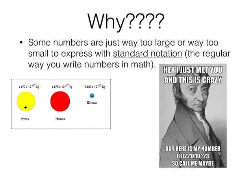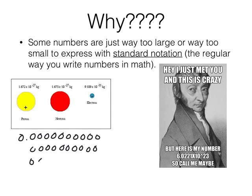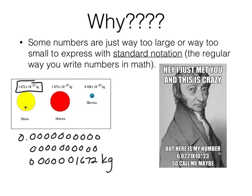Why do we use scientific notation? Some numbers are just way too large or way too small to express in standard notation. For example, the mass of one proton written out would be 0. followed by 27 decimal places — you can't even type that across a classroom calculator. That's not a useful value at all. But using this notation with the exponent, that's useful and compact.